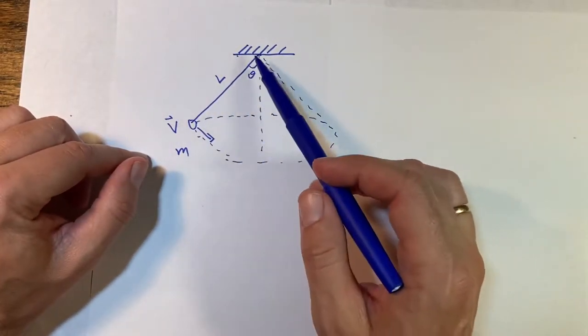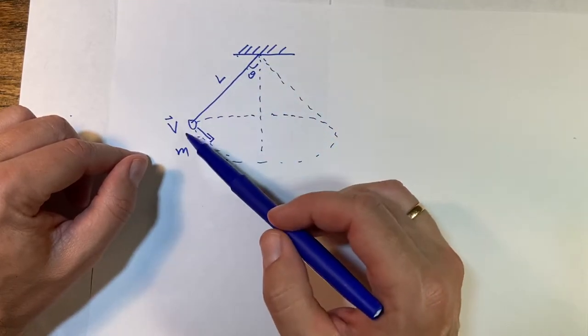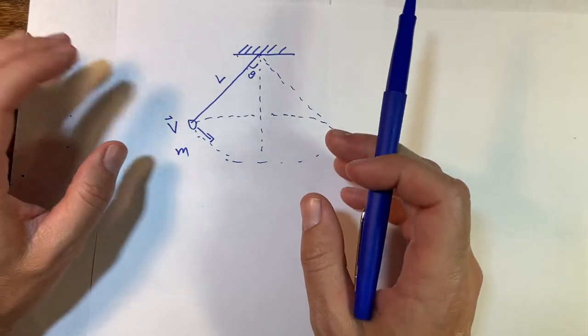So we have a couple of things. We have the angle that it makes with the vertical, we have the length of the string, we have the velocity, and the mass. Let's see what kind of relationship we can get here.